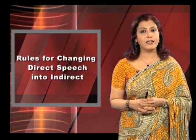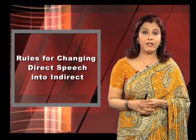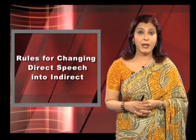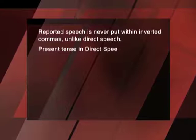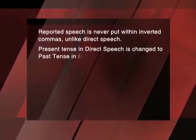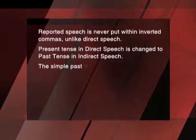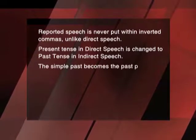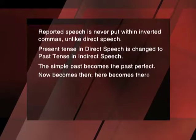After explaining all the rules of indirect speech, we can revise each point with students several times so that they do not have any difficulty when doing exercises. The first rule was that reported speech is never put within inverted commas, unlike direct speech. Then we saw how present tense in direct speech is changed to past tense in indirect speech — this rule applies for simple present, present continuous and present perfect. Also, the simple past becomes the past perfect. We also learnt how 'now' becomes 'then', 'here' becomes 'there', 'this' becomes 'that', 'today' becomes 'that day', etc.